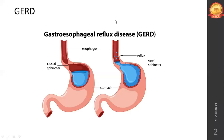We will divide GI diseases into upper GI disease, intestinal disease, and irritable bowel syndromes. Starting with the first disease — gastroesophageal reflux disease, GERD in short.